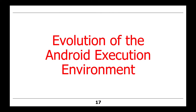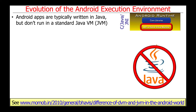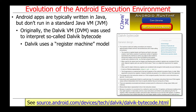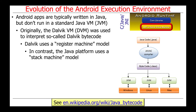Let's talk about the evolution of Android's execution environment, which has changed a bit over the years. Android apps are typically written in Java, but they don't run on a standard Java virtual machine, or JVM. Originally, they used something called the Dalvik virtual machine, or the DVM, to interpret so-called Dalvik bytecode. Dalvik used what's called a register machine model, where virtual instructions are executed in software by the interpreter. In contrast, the Java platform and the JVM uses what's called a stack machine model, which is a slightly different way of implementing the execution and interpretation of bytecode.